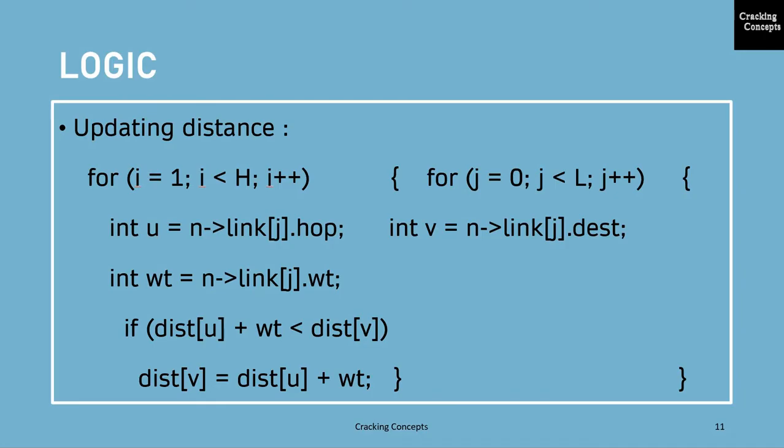Each link is taken. As I have said already, link has three properties: the hop, destination and weight. I have declared three variables locally in order to store these three values, that is u, v and wt.